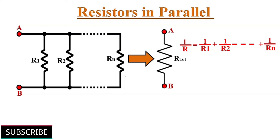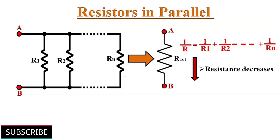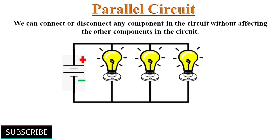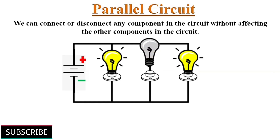Hence the total resistance of the circuit is always less than the smallest resistance value in the circuit — resistance decreases in a parallel combination. The main advantage of parallel circuits is that we can connect or disconnect any component without affecting the other components, because each has its own independent connection.